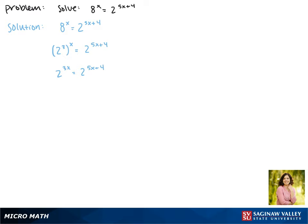For this equation to be true, the exponents must be equal, so we can say 3x equals 5x plus 4.